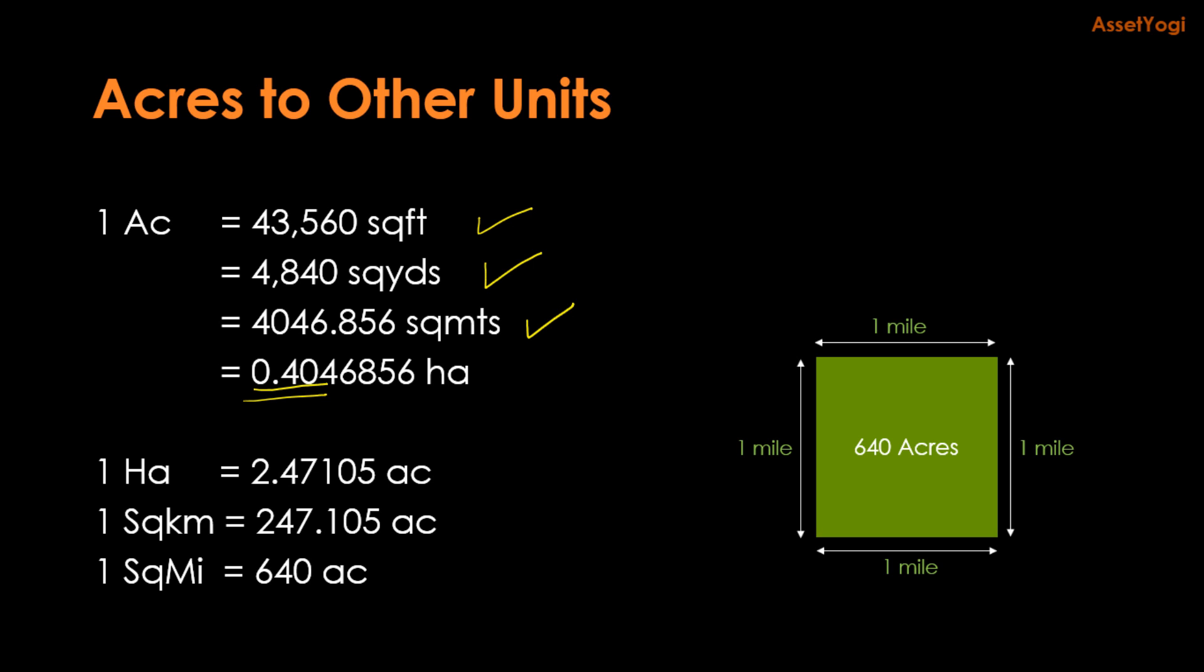If you have to convert from hectare to acres, then one hectare is about 2.47 acres and one square kilometer is about 247 acres. A square mile is equal to 640 acres. If you have to imagine one square mile of area or 640 acres, then you can imagine a square which is one mile long and one mile wide.